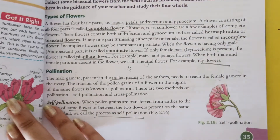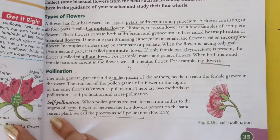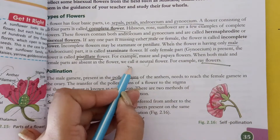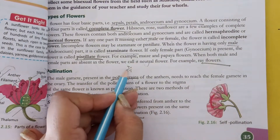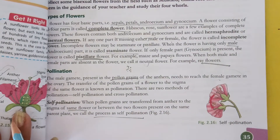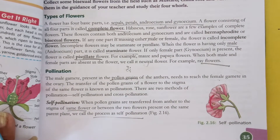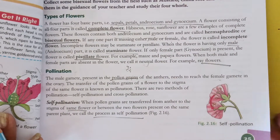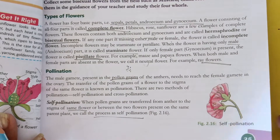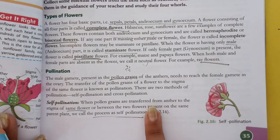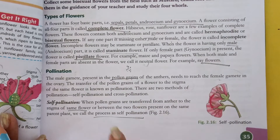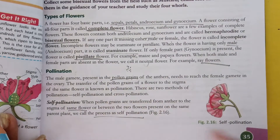Pollination kya hota hai? Jaise jo male gametes hota hai, matlab jo androecium hota hai, unke andar pollen grains hote hai — chhote chhote, low color ke pollen grains jo anther mein hote hai. Ab unko definitely female gametes ke paas jana hai. Female gametes matlab gynoecium ke paas jana hai. Toh transfer hota hai pollen grain ka anther se stigma — us process ko bolte hai pollination.